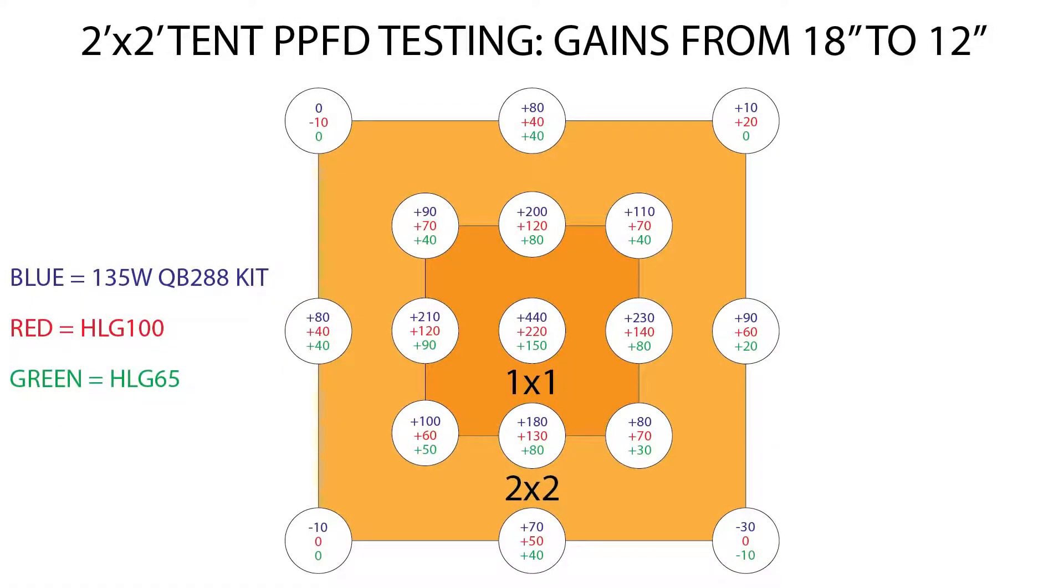Now just to help visualize what you actually gain by moving from 18 inches down to 12 inches, I calculated the difference between each position for each of the three lights, and compiled it into another PPFD chart that you're looking at now. It might be worth pausing the video just to have a closer look at this, but I'll summarize it kind of quickly. The biggest gains were obviously made in the center and the 1 foot perimeter areas. Moving the lights down from 18 inches to 12 inches resulted in a center spot gain of about 440 micromoles for the 135 watt kit, 220 micromoles for the HLG100, and 150 micromoles for the HLG65.